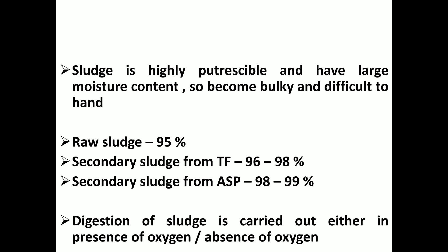For raw sludge, moisture content is almost 95%. Secondary sludge from trickling filters is 96% to 98%. Secondary sludge from activated sludge process is 98% to 99%. We need to reduce this moisture through the digestion process.